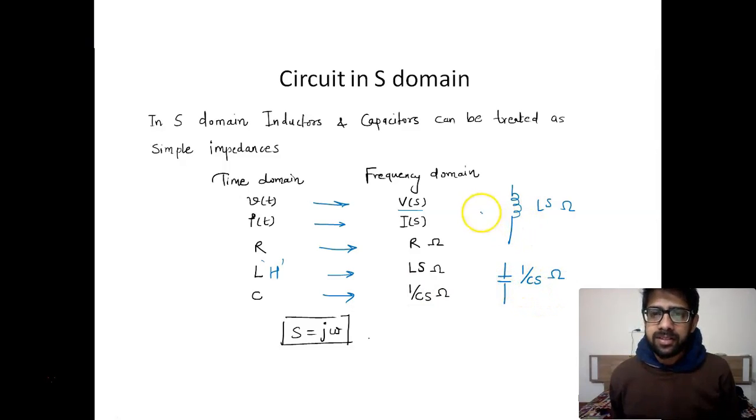Now these things are true for s equals j omega, and that is exactly why you can see that if you replace s by j omega, you can see the impedances are j omega L and 1 upon j omega C, which you already have. Also, these things are true for zero initial conditions.